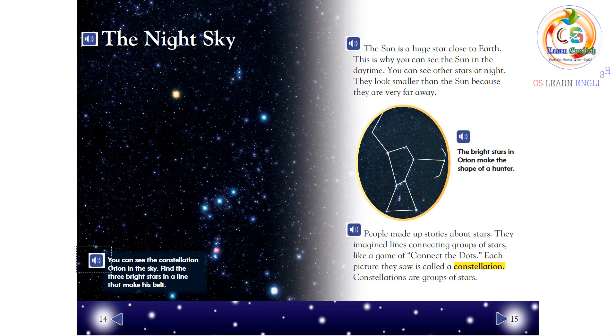You can see the constellation Orion in the sky. Find the three bright stars in a line that make his belt. The Sun is a huge star close to Earth. This is why you can see the Sun in the daytime. You can see other stars at night. They look smaller than the Sun because they are very far away.